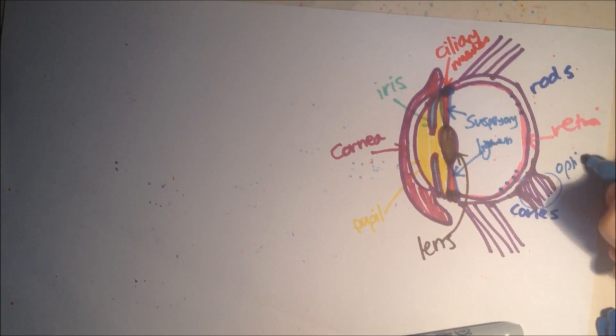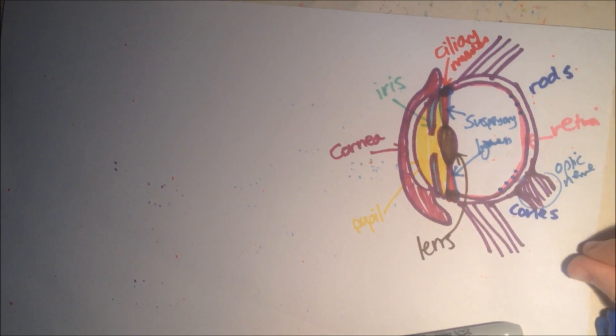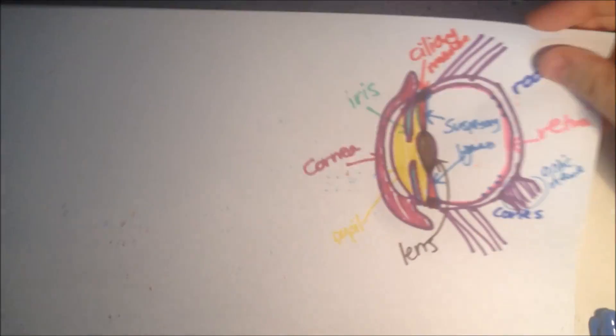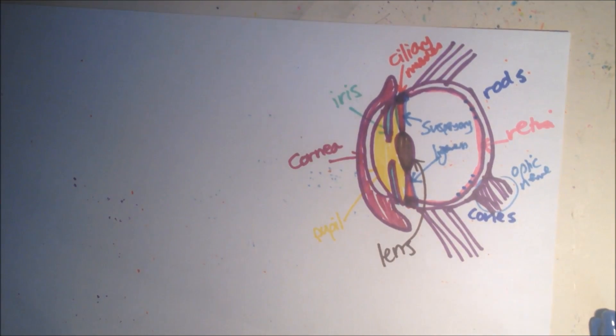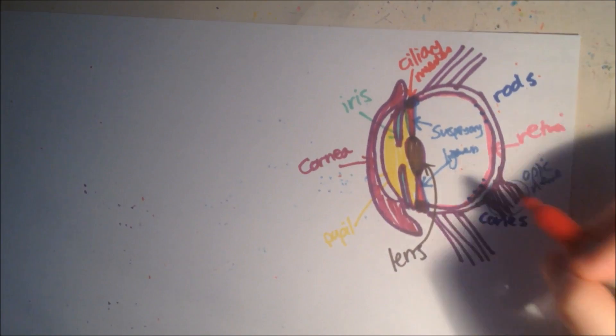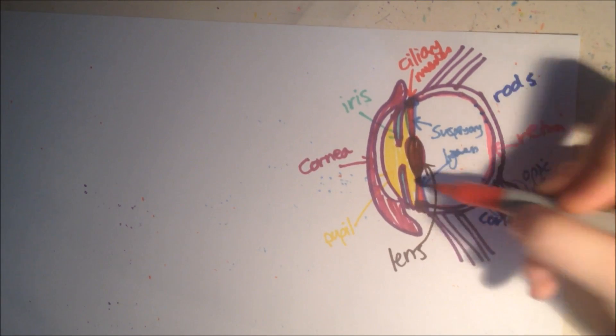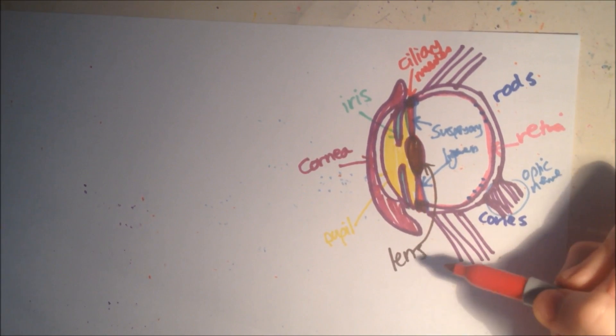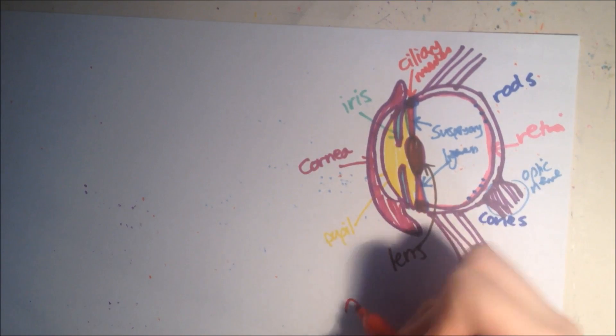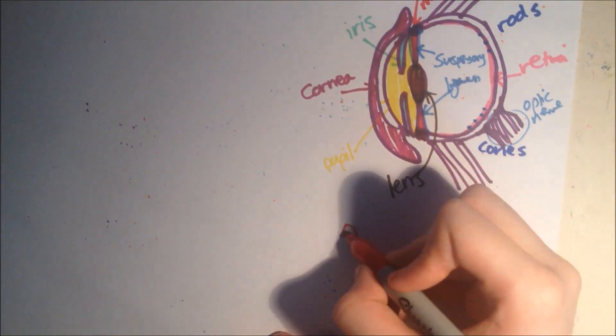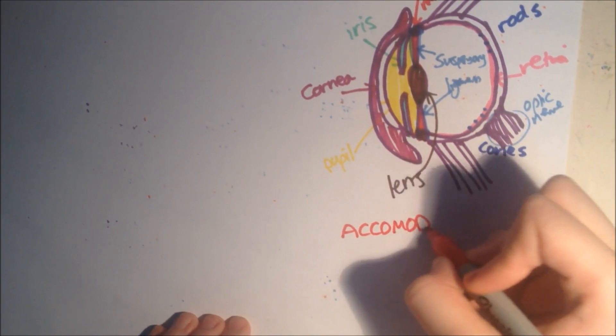And finally this bit here is the optic nerve. Okay, so that's the main picture of an eye. So now I'm going to tell you about focusing on near and distant objects. So the lens is elastic, so this is the lens here, and it's elastic. Which means it can focus the light by changing the shape, and it's known as accommodation.